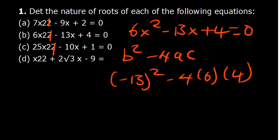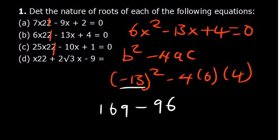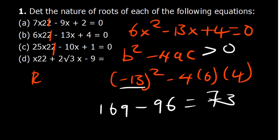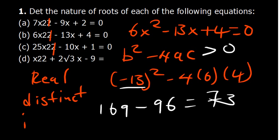Then 4 times a times c: 4 times 6 times 4 equals 96. So 169 minus 96 gives us 73. Since 73 is greater than 0, the roots are real and distinct. They are also irrational because the square root of 73 is not a perfect square — it will be a decimal number.